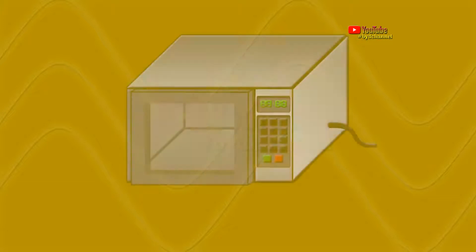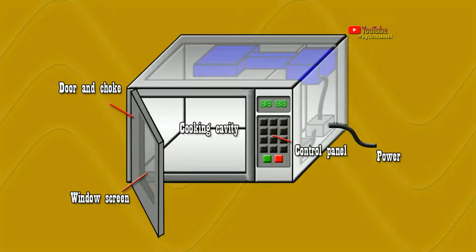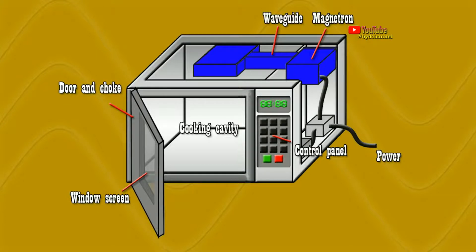There are three major components of a microwave oven: magnetron, waveguide, and microwave stirrer.